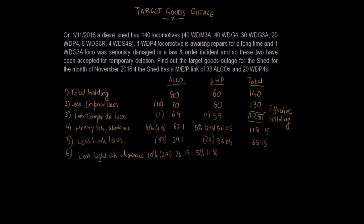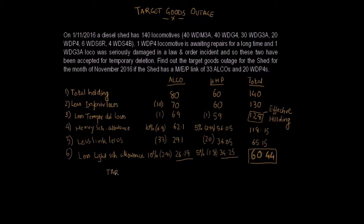The total of 26.19 and 34.25 is 60.44. This is the all-important figure — this is the target goods outage. So the target goods outage for that particular shed in the month of November 2016 is 60.44.